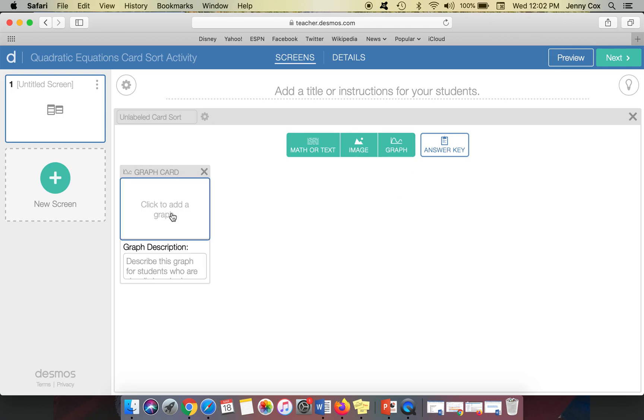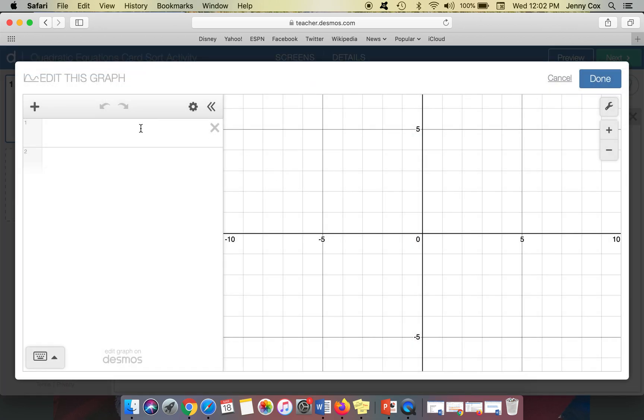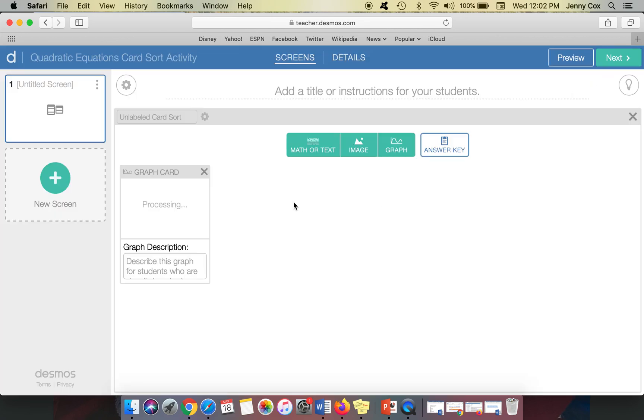So with this, I'm going to go to graph and it creates a graph card. And when I click it, I can put whatever I want to put. So if I do like x squared plus four, then I can hit done. And that's now a card that students can select. So maybe I want some other things to describe this card.